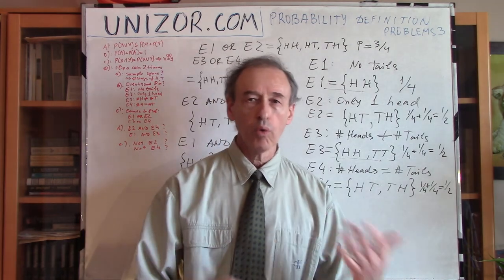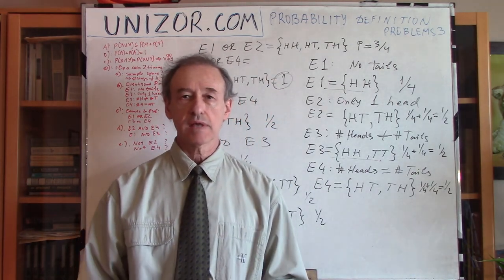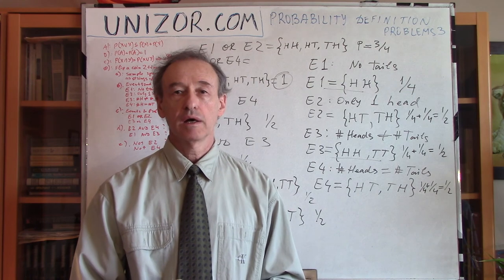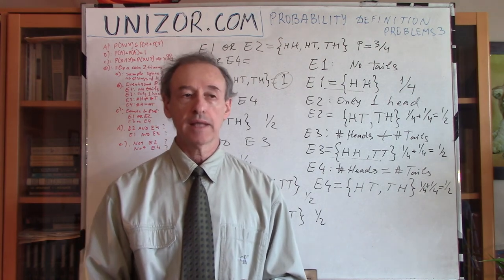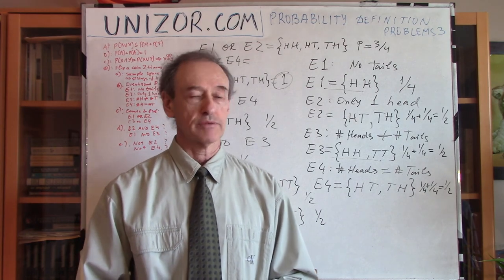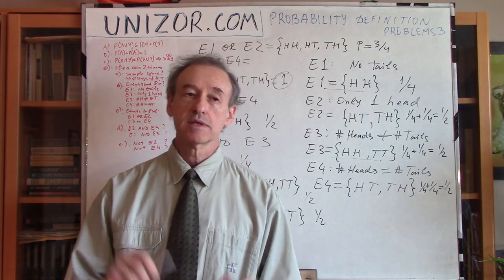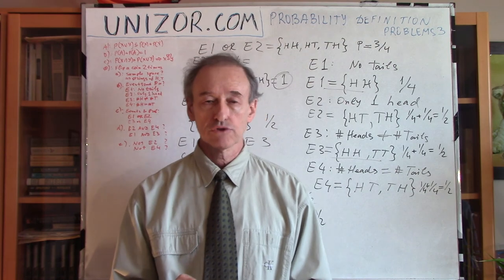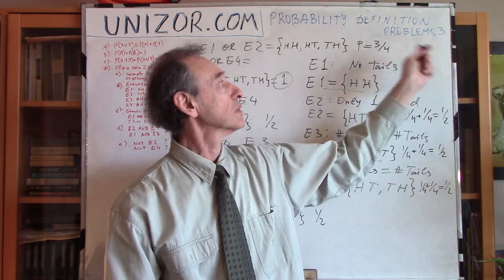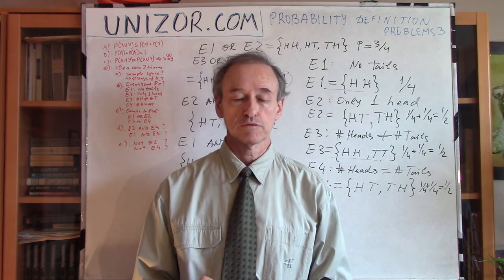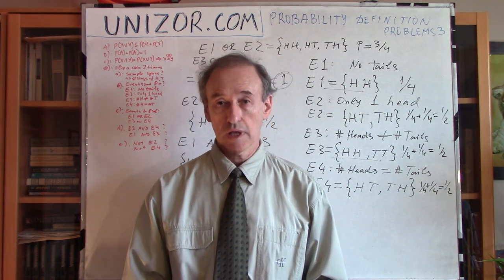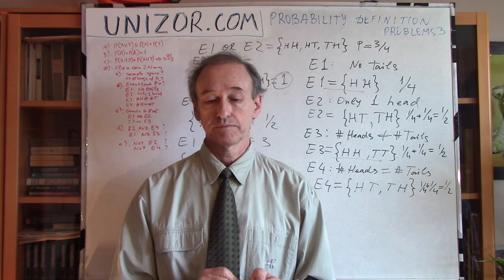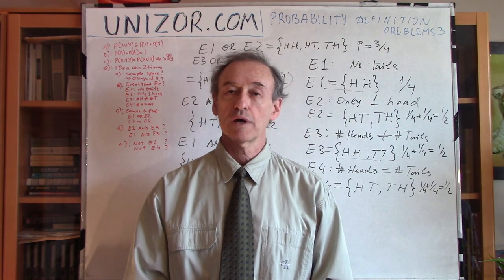These are all illustrative, very simple exercises with elementary events for one particular case. There are many different analogous examples we could present. What I suggest is go to unizor.com, to this particular lecture — it's problems number 3 among the formal definitions of probabilities — and try to do it yourself on a piece of paper to see if you can do it. That would be a very good exercise. That's it for today. Thank you very much and good luck.